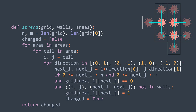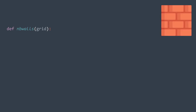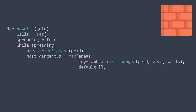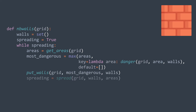Now that we have all the helper functions, we can write the nb_walls function. It takes the initial grid as a parameter, creates a set of walls and a variable spreading. While the virus is still spreading, we get the areas, identify the most dangerous one, put walls around it, spread the virus, and assign the boolean returned by spread to spreading. If spread returns false, the grid didn't change — either all areas are surrounded or the city is completely infected — and the loop stops. After the loop, we return the total number of walls used.